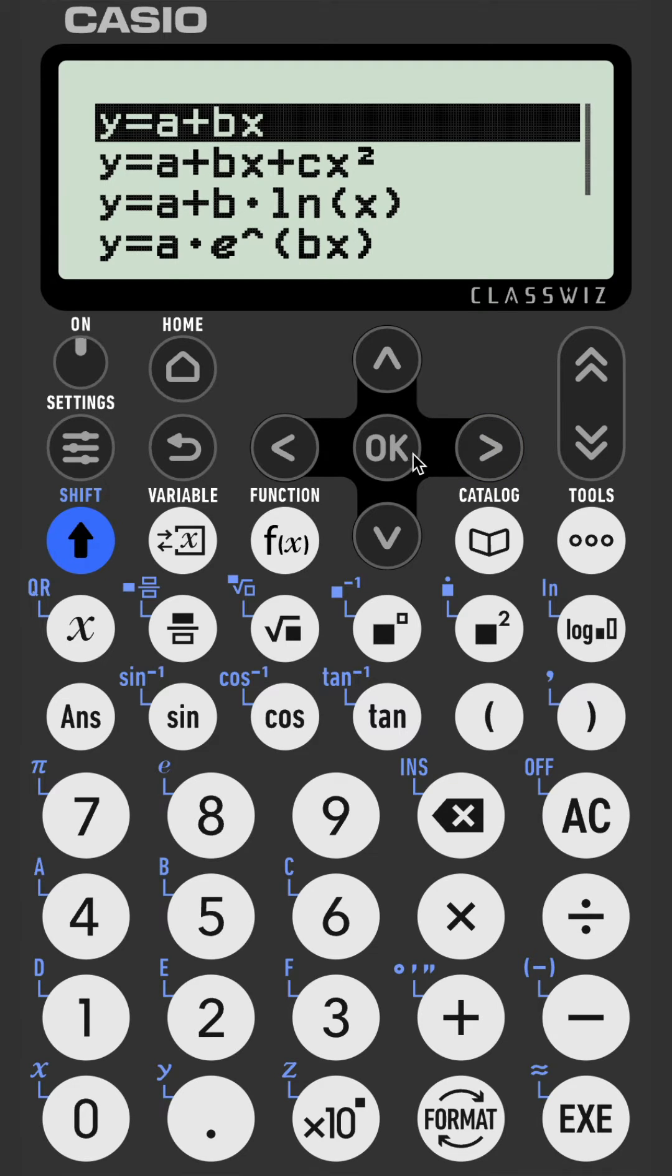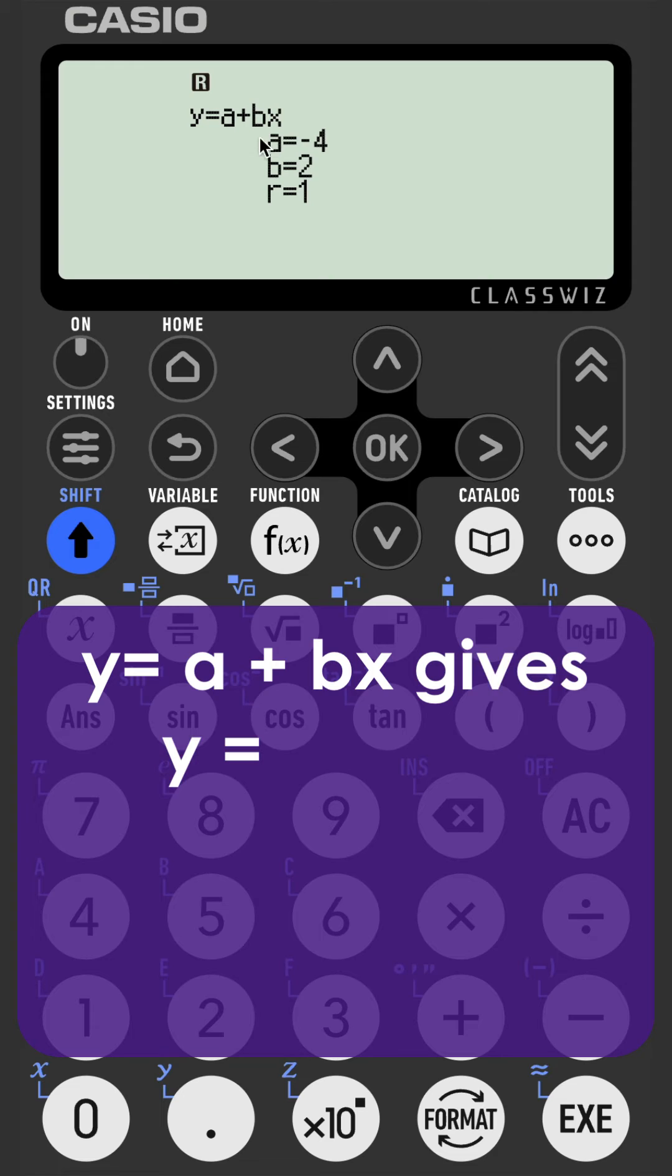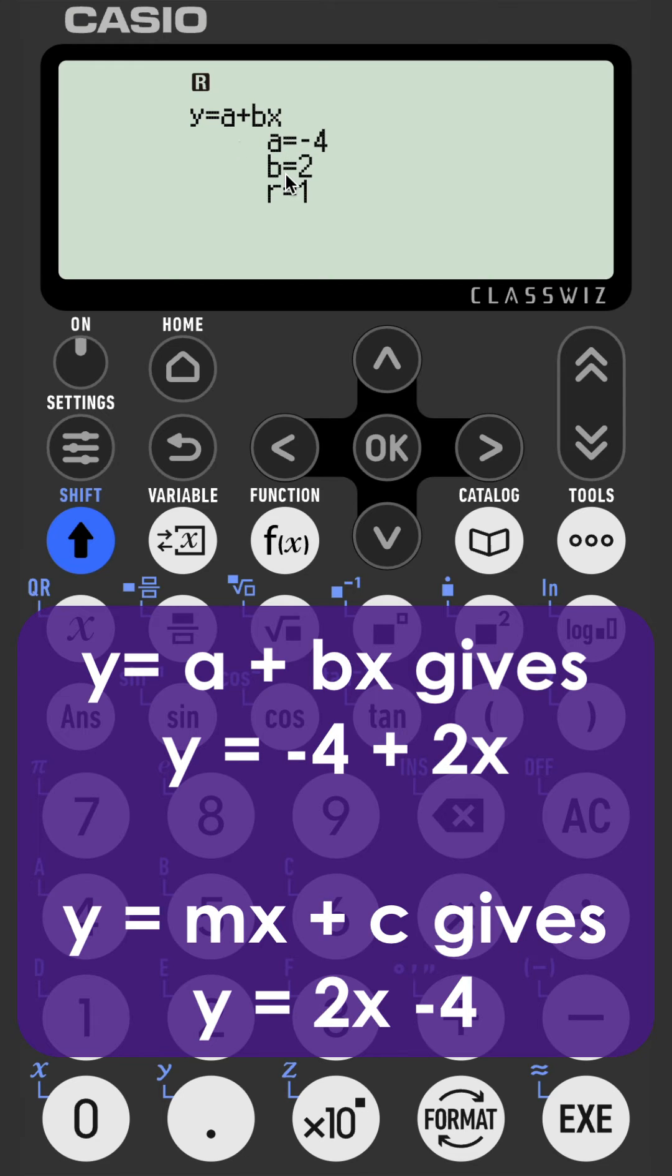The calculator gives this in Y equals A plus BX form. So in this example, A is negative four and B is two. Y equals negative four plus two X.